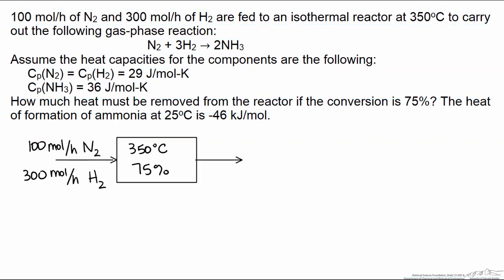The problem statement tells us that we are feeding 100 moles of nitrogen and 300 moles of hydrogen to a reactor that operates at 350°C and a conversion of 75%. This is a stoichiometric feed of 1 to 3, matching the reaction stoichiometry. That 75% conversion means we'll consume 75 moles of nitrogen, leaving 25 moles of nitrogen. We'll have 75 moles of hydrogen remaining, and we will have formed 150 moles of ammonia.